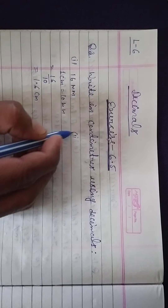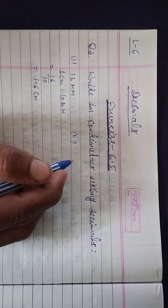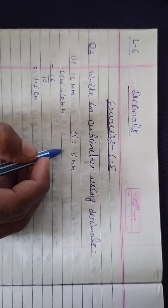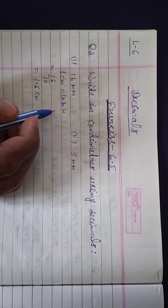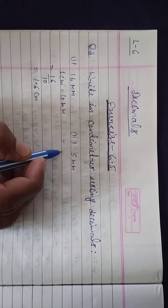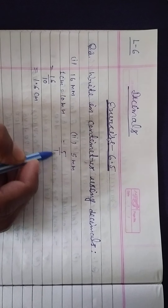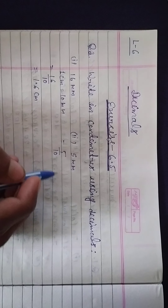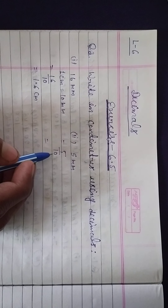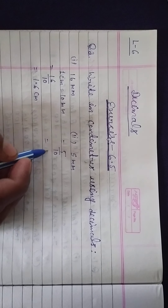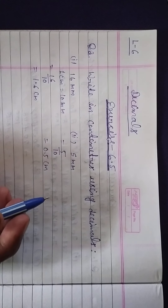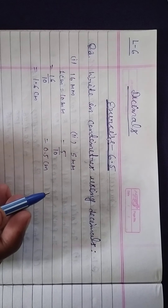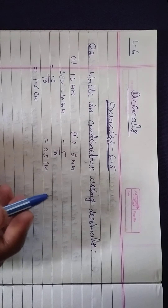Next, question number 2 is 5 millimeters. As we know, 1 centimeter is equal to 10 millimeters, so I will write the answer directly. 5 upon 10 — we are dividing by 10 — gives us 0.5 centimeters. So we have changed 5 millimeters into centimeters, which is 0.5 centimeters.